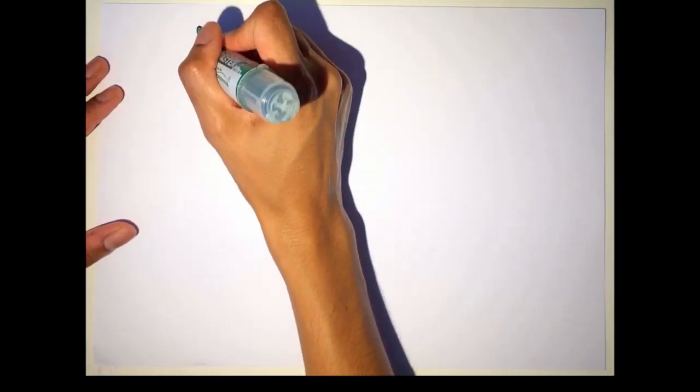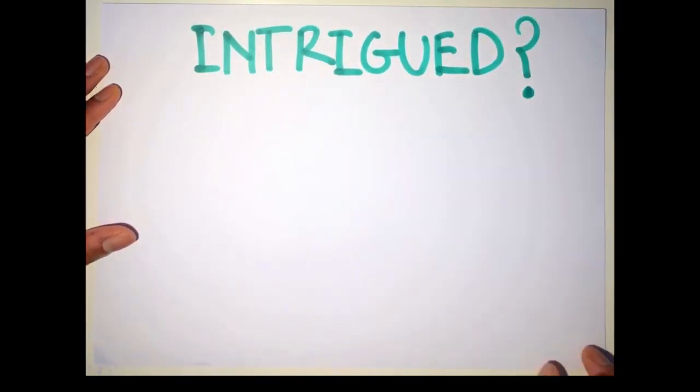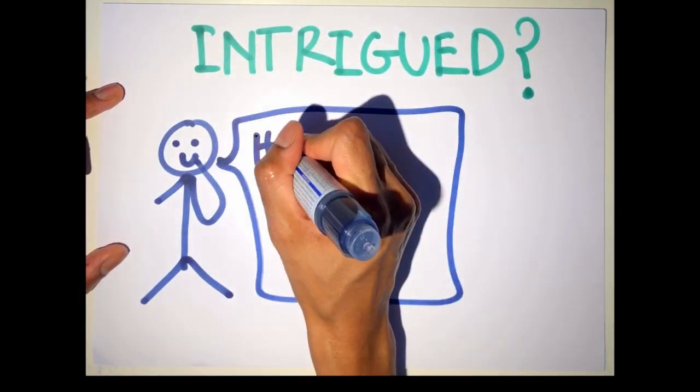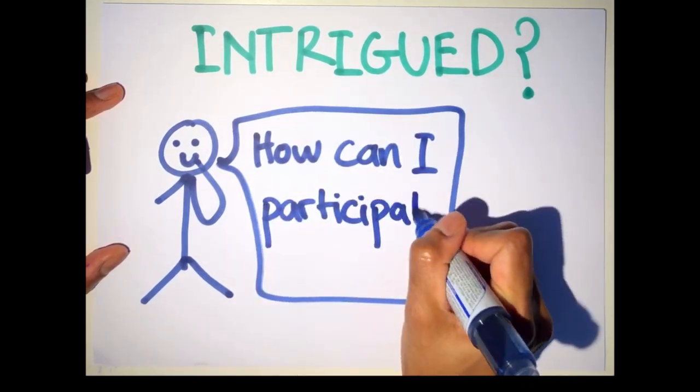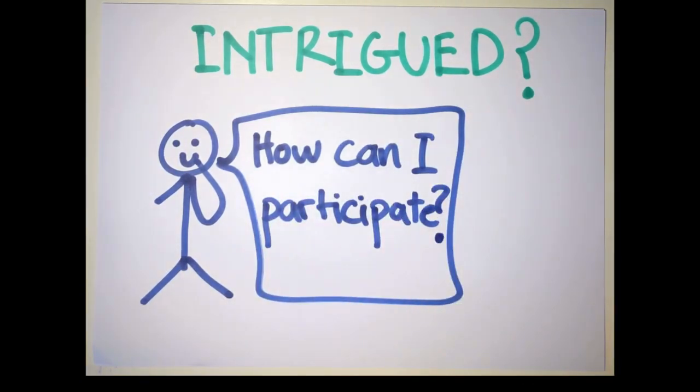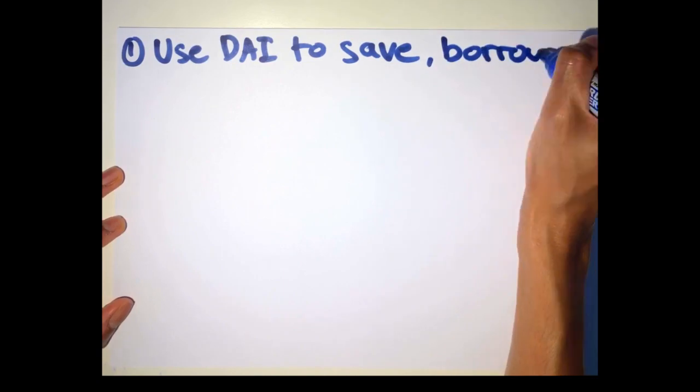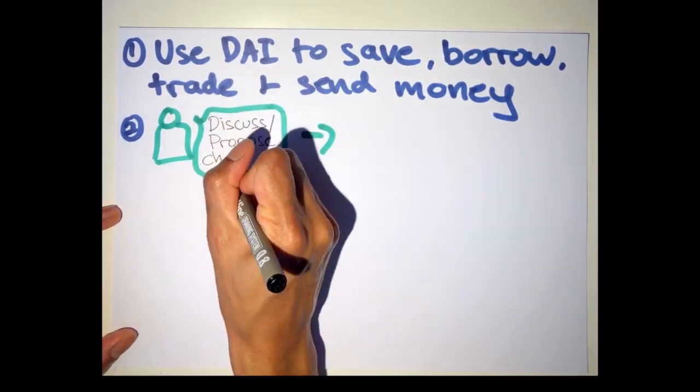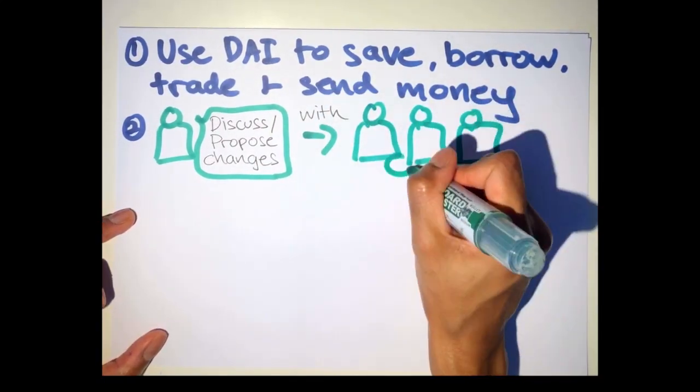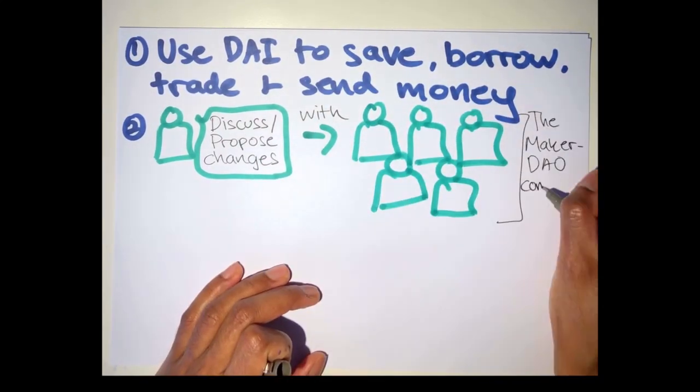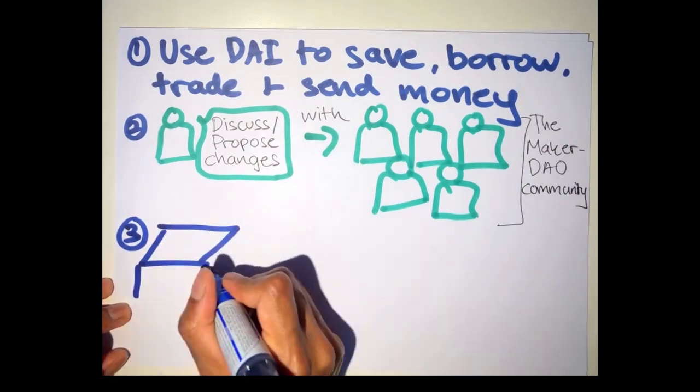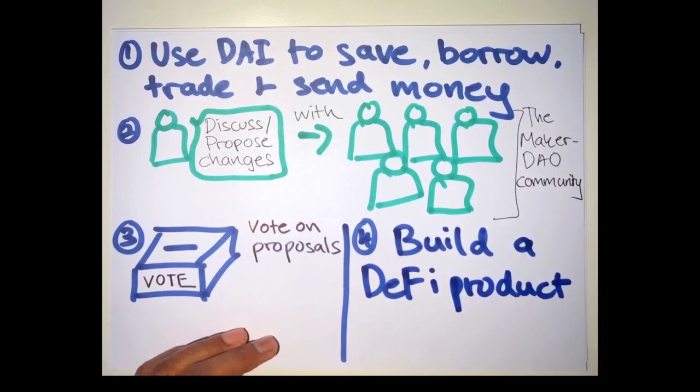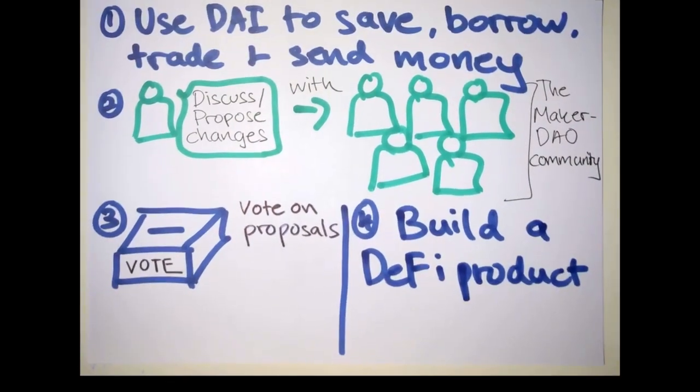If you've watched this video this far and you're intrigued by MakerDAO and DAI's lending mechanism, here's how you can participate in this revolution to self-sovereign wealth accumulation. You can use DAI to save, borrow, trade and send money. You can participate in various MakerDAO community discussions. You can make improvement proposals. You can vote on the proposals and if you have an idea for a DeFi product, you can also leverage its ecosystem to build a DeFi product.